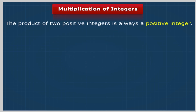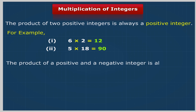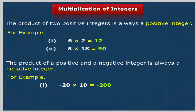Multiplication of integers. The product of two positive integers is always a positive integer. For example, 6 × 2 = 12; 5 × 18 = 90. The product of a positive and a negative integer is always a negative integer. For example, (−20) × 10 = −200; 11 × (−17) = −187.